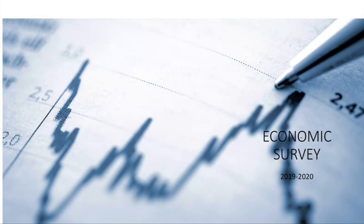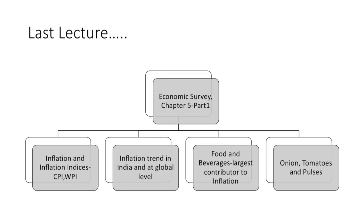Hello friends, welcome to the lecture series on Economic Survey. In our last lecture, Part 1 of Economic Survey Chapter 5, we revised inflation and inflation indices, CPI and WPI. We saw the inflation trend in India and at the global level, and that the food and beverages group was the largest contributor to inflation. We also saw that onions, tomatoes, and pulses contributed the most to food inflation, along with the reasons for the rise in prices of onions and tomatoes.